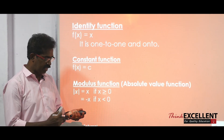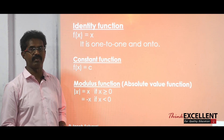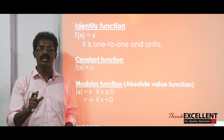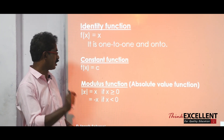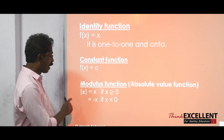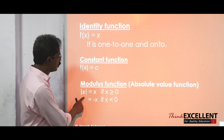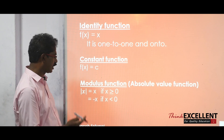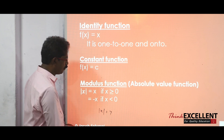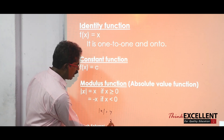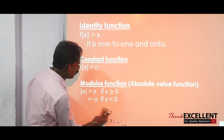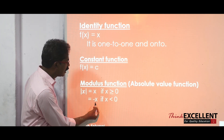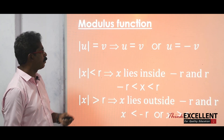Identity function means every element is related to itself — x is related to x. Constant function means every element is related to a constant. Modulus function, or absolute value function: modulus x equals x when x is positive, and modulus x equals −x when x is negative. For example, modulus x = 7 gives two cases: x = 7 or x = −7.